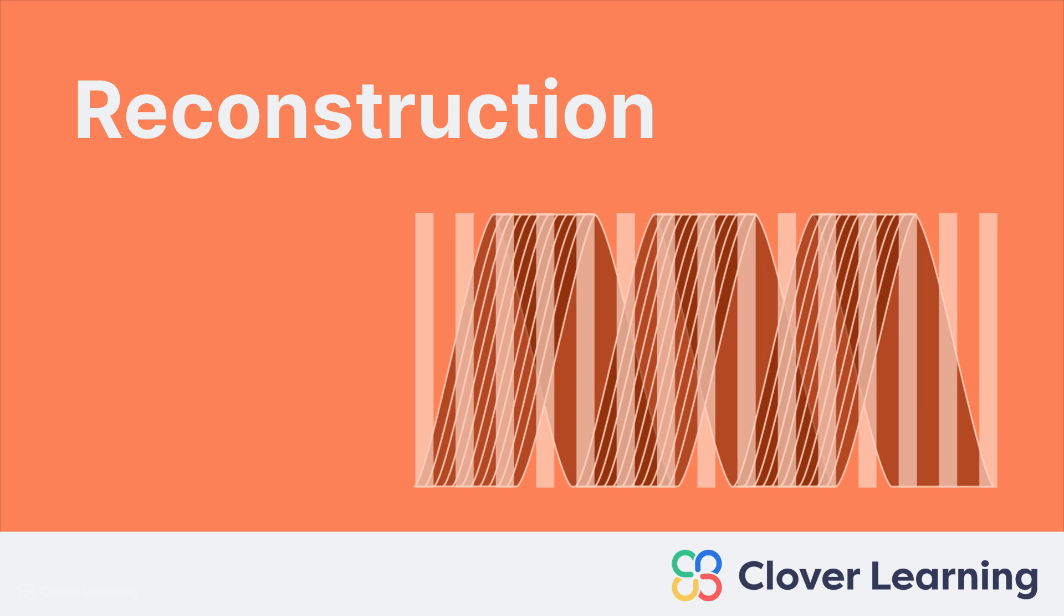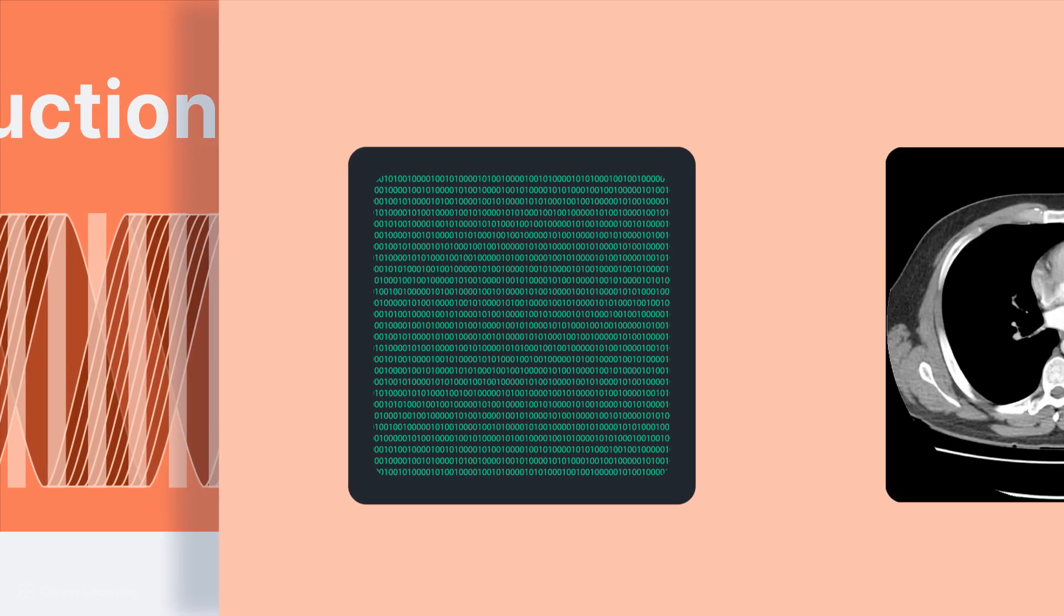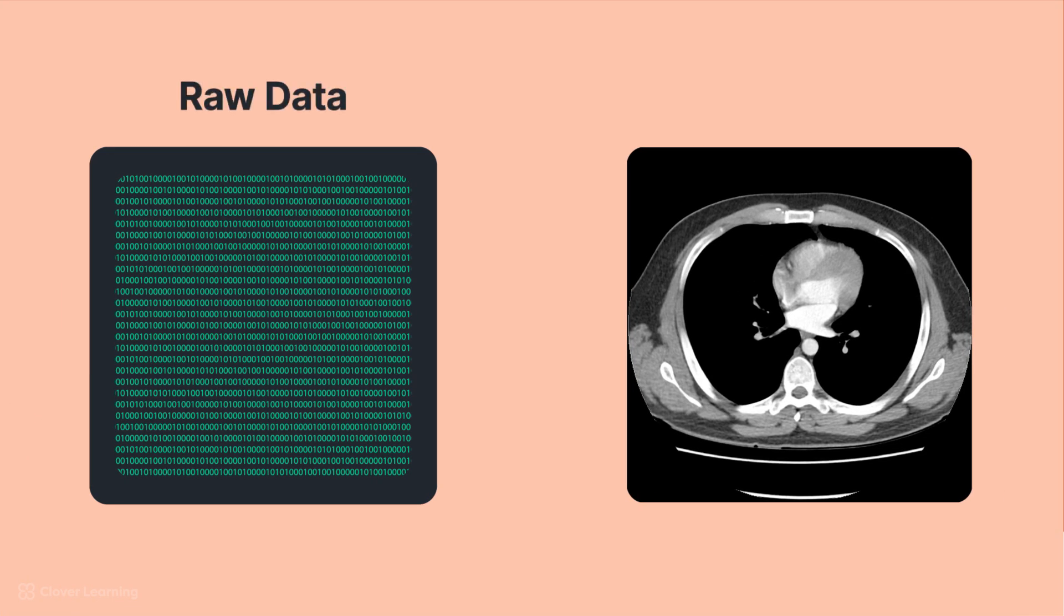This lesson is about an important part of CT image processing called reconstruction. The digital signal leaving the data acquisition system is considered raw data. It cannot be viewed by technologists because this information is unprocessed data, sometimes called scan data. Reconstruction is the process through which this raw data becomes image data or processed data. Raw data is stored only in the CT control console, but the image data is what's sent to PACS for the radiologist's interpretation.